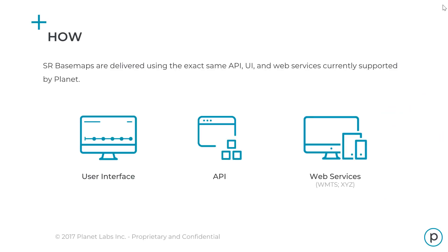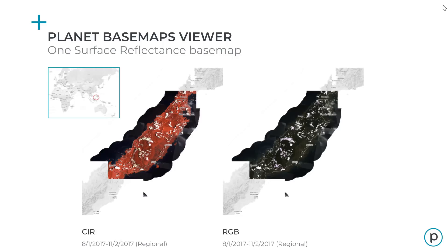Surface reflectance basemaps are delivered using the exact same API, UI, and web services currently supported by Planet. The new Planet basemap viewer allows you to view basemaps as either standard RGB or color infrared products. It also allows you to interactively compare two basemaps side by side to help you quickly understand changes between two time periods.